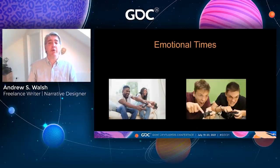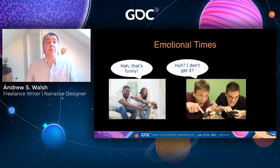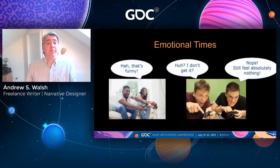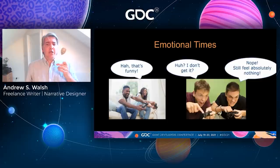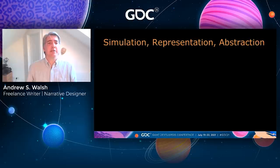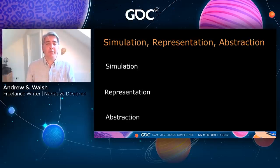Where we fail to align the emotional content of the game with the emotional reaction of the player, the player will be left feeling confused, abused, angry, or feeling nothing at all. The dreaded ludonarrative dissonance will eject them from the game. So for each game we make, for each moment and each emotion we're exploring, we need to ask if it is a simulation, a representation, or an abstraction.